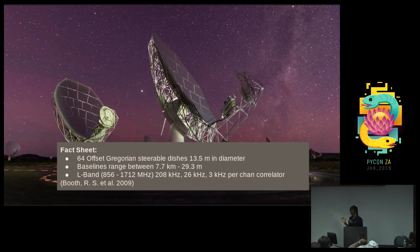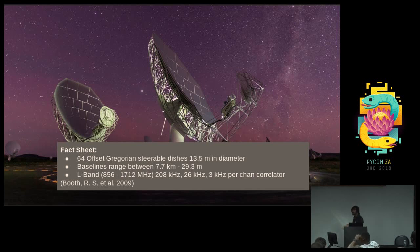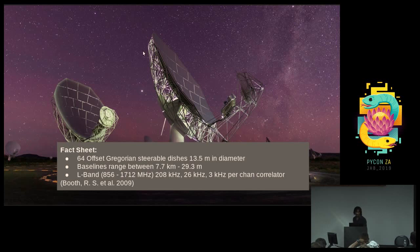In terms of specifications, there are 64 dishes located in the Karoo, separated by a maximum distance of about eight kilometers. At the moment they are equipped with receivers functioning in the L-band, and they use correlators which chop the spectrum into different channels — there are three modes available. There are also plans in progress for adding additional receiver bands.